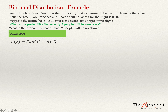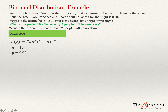In this problem, n equals 10 — the total number of trials — and p equals 0.08, the probability of success. For the first question, we are interested in x equal to 2: what is the probability that the random variable takes the value 2, meaning there are exactly two no-shows? We just need to substitute these values into the formula.